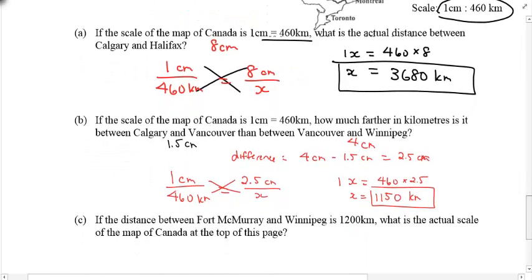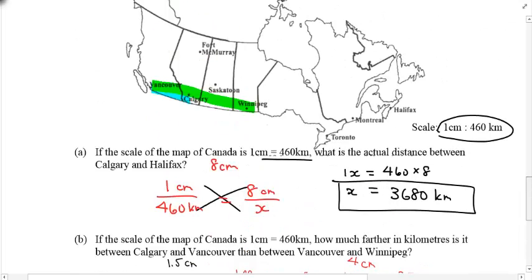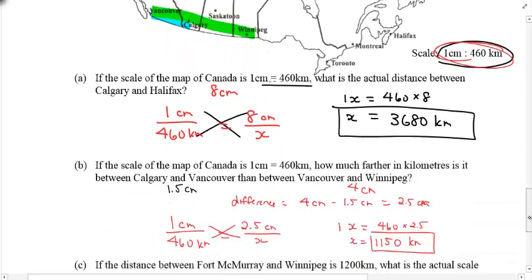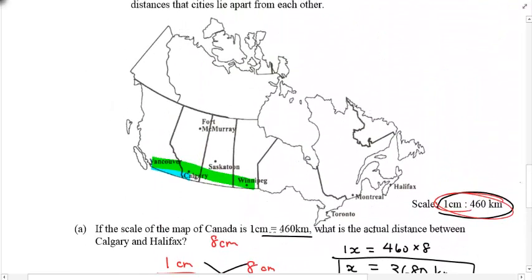Alright, distance between Fort McMurray, the oil sands capital of Canada, and Winnipeg is 1,200 kilometers. So, in this case, and we're talking about a different map now, we're saying that what is the actual scale of the map in Canada at the top of this page? So, what I'm saying is, look, you know what? Maybe this number, that was a lie. I now know that the distance between Fort McMurray and Winnipeg is 1,200, and the question is, what is the actual scale? So, if I were to now use my ruler to measure between Fort McMurray and Winnipeg, what is this actual length?